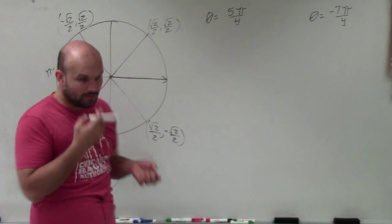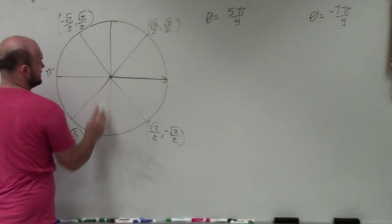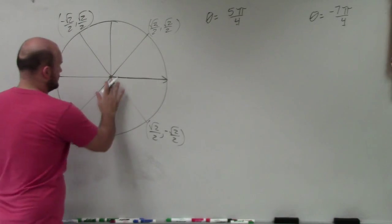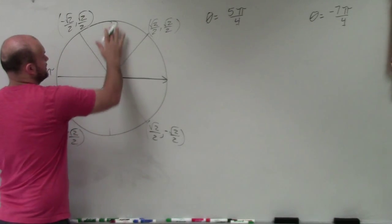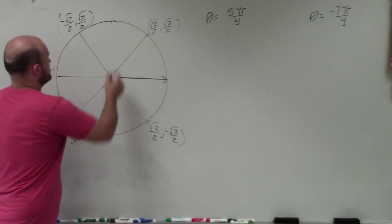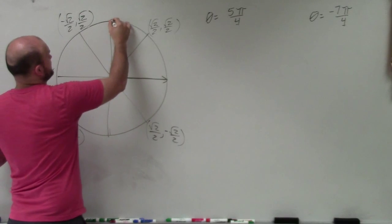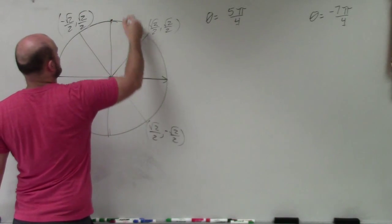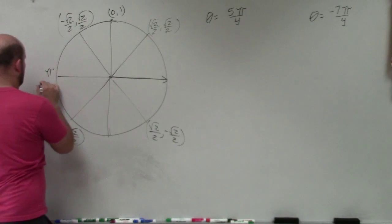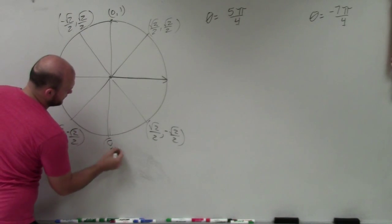These are all four points when breaking the circle into fourths. We also have the axis points: 0 comma 1 at the top, negative 1 comma 0 on the left, 0 comma negative 1 at the bottom, and 1 comma 0 on the right — one fourth, two fourths, three fourths, four fourths.